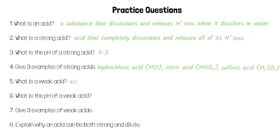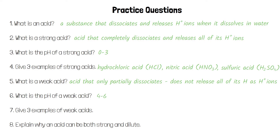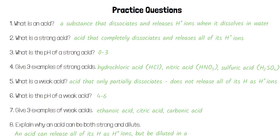A weak acid is an acid that only partially dissociates; not all of its molecules dissociate and release hydrogen ions. The pH of a weak acid is between 4 and 6. Three examples of weak acids are ethanoic acid, citric acid and carbonic acid. An acid can be both strong and dilute, because it may dissociate completely but be dissolved in a large volume of water.